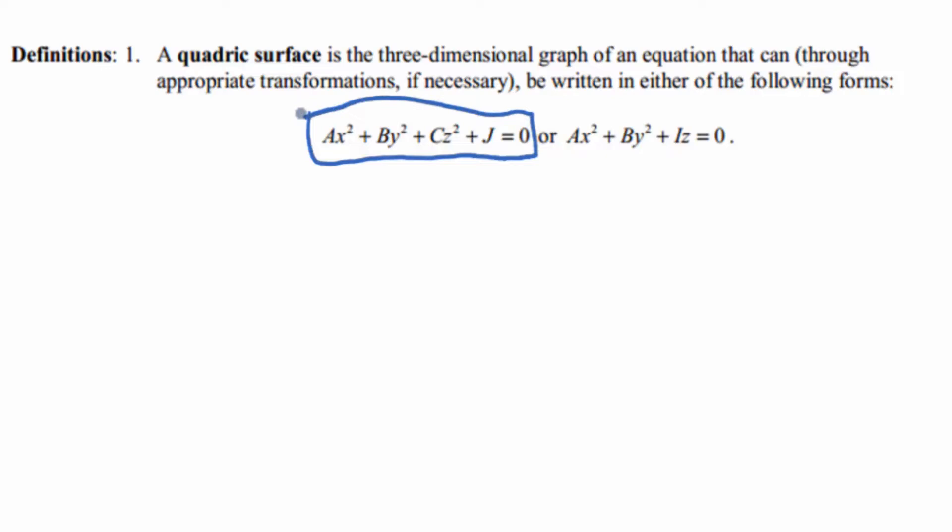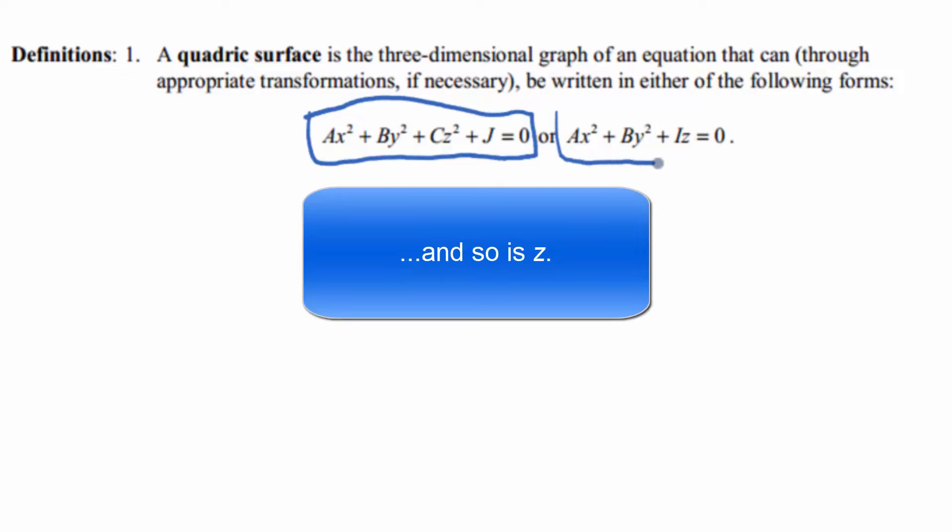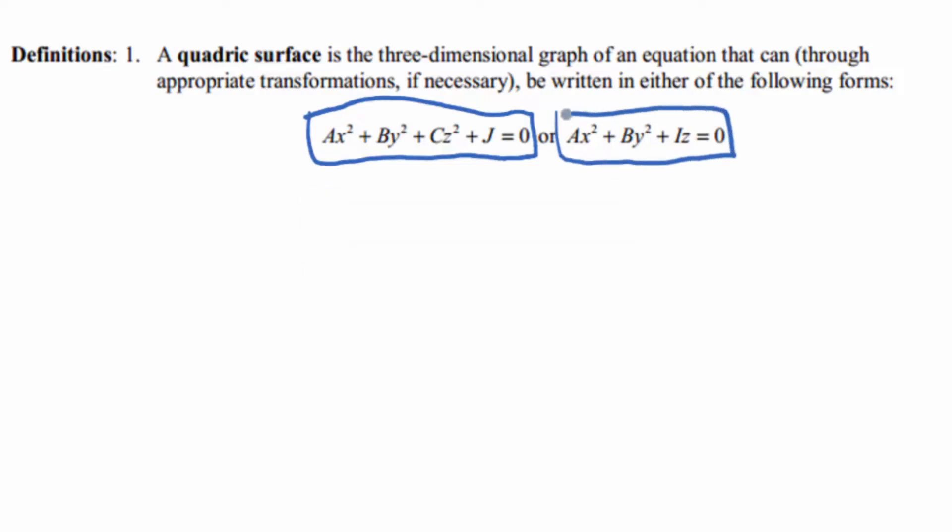Either ax squared plus by squared plus cz squared plus j equals zero, where a, b, c, and j are constant, and x and y are the variables. Or ax squared plus by squared plus i times z equals zero.